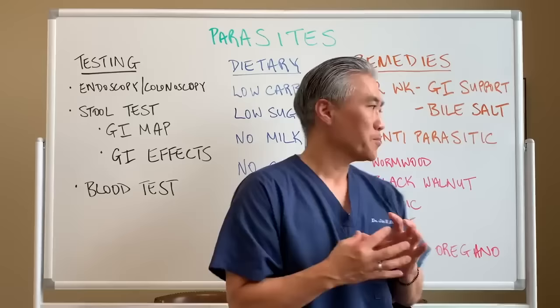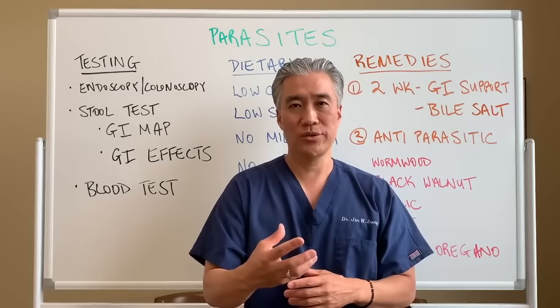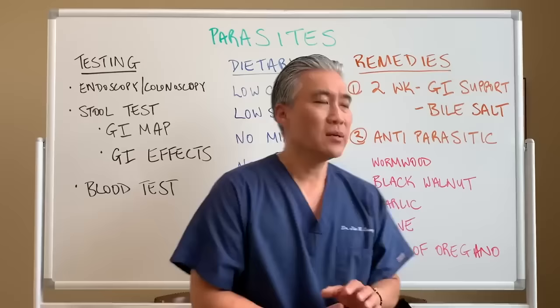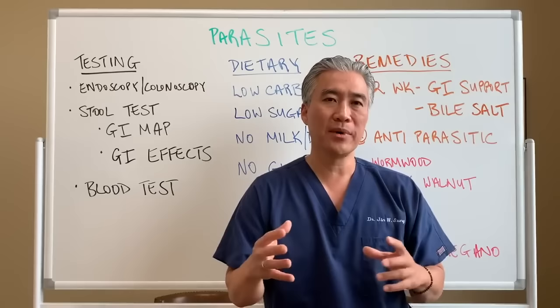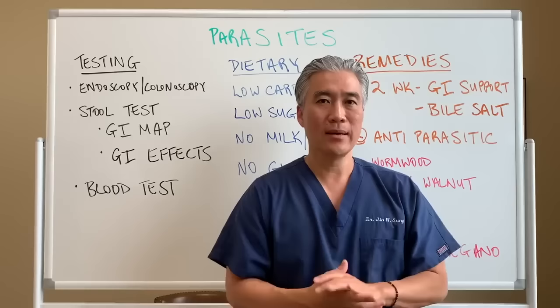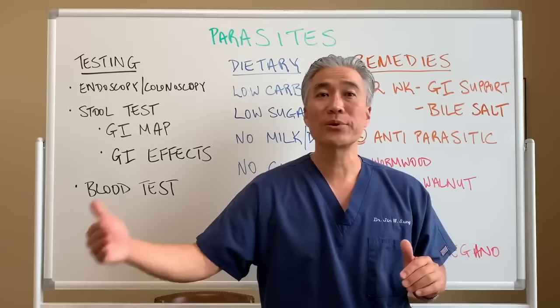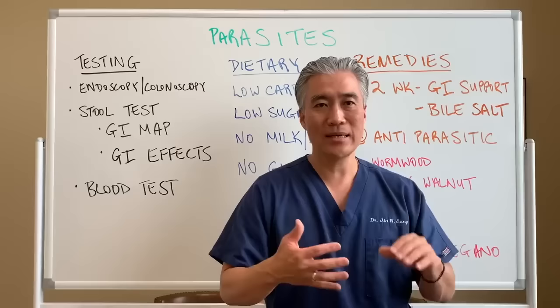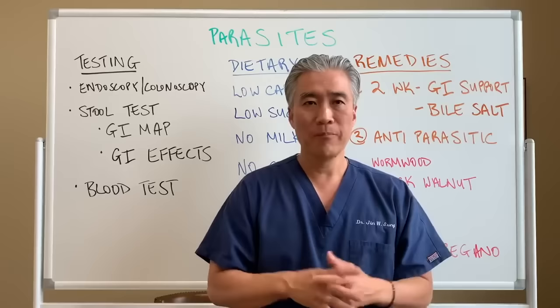Berberine, olive leaf extract, and other antimicrobial supplements are also options. I suggest taking a combination pack rather than just wormwood or black walnut alone to really target a parasitic infection. The treatment timeframe is a minimum of four to six weeks, preferably six to eight weeks. To know if it's working, you can retest after waiting three weeks post-treatment, or look for symptom relief — reduced anxiety, itchy skin, etc. Supplements will be linked below.